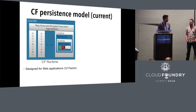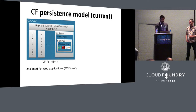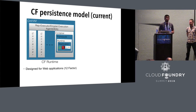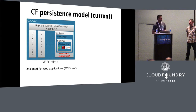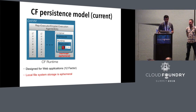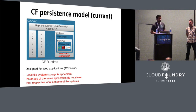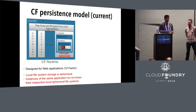Cloud Foundry is a very good runtime for web applications built using the 12-factor paradigm. CF runtime manages application instances — it manages cells and VMs and deploys application instances in isolated containers using buildpacks. There is an ephemeral file system available inside a container which is at the disposal of the application, but as the name suggests, it's ephemeral. There are no guarantees on this file system. This is local to the container.